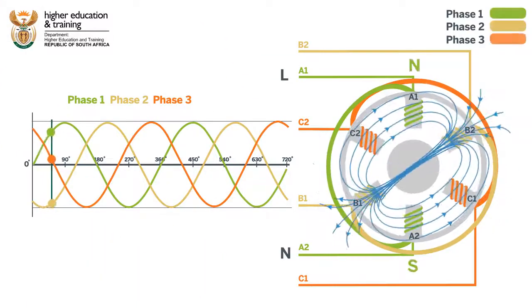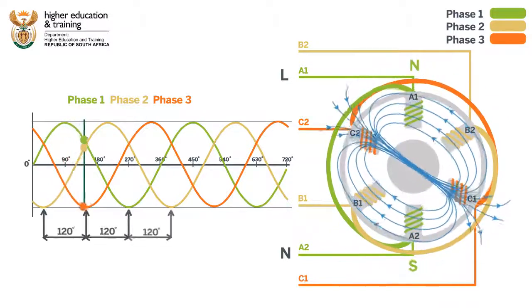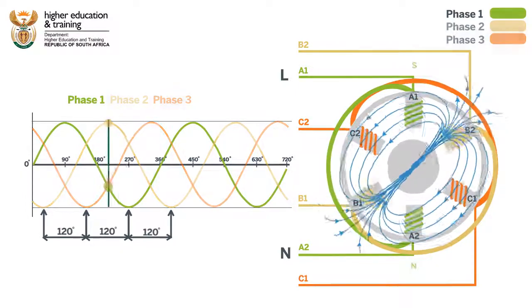We saw with the three-phase motor that the three phases being out of phase by 120 degrees produces a rotating magnetic field.